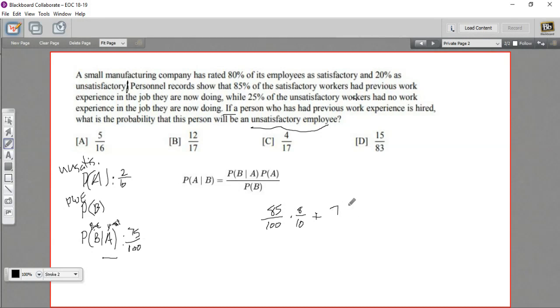The unsatisfactory workers, it says 25% had no work experience, and that means that 75% did. So that's this number we just grabbed down here. So the unsatisfactory workers, the probability they had work experience is 75 out of 100. And then I multiply it by the probability of being unsatisfactory, which is 2 out of 10. And this should give us the total probability of having previous work experience. So that's really the tricky bit in this problem. And let's do some math here. I'm going to pull up my calculator to make sure I don't make any mistakes. So 85 times 8, that's 680 over 1,000, just multiplying top and bottom here. And then plus 75 times 2 is 150 over 1,000. So we're getting 830 over 1,000. And we can divide top and bottom by 10, and we get 83 out of 100. So that is our probability of B.